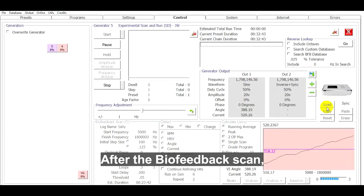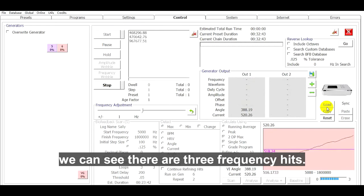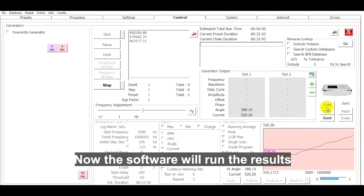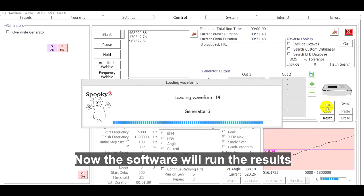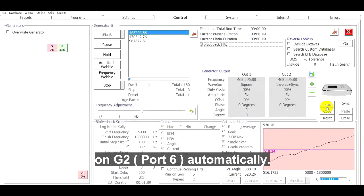After the biofeedback scan, we can see there are 3 frequency hits. Now the software will run the results on G2 automatically.